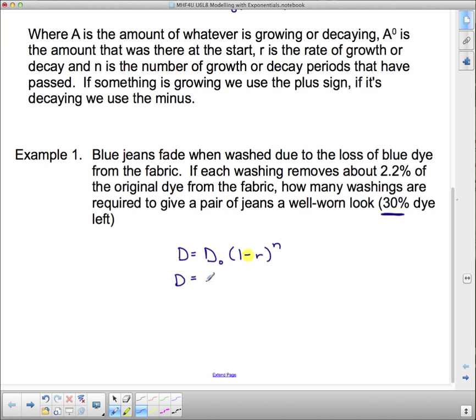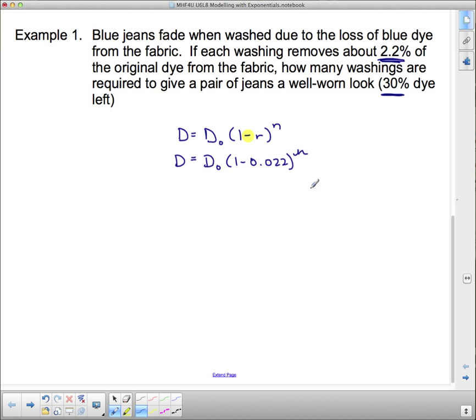And n of course is the number of washings required, the number of times we lose this 2.2%. So D equals D₀ - we don't actually know how much was in there to begin with but we want 30% left, so we do know what the ratio of those two things are.